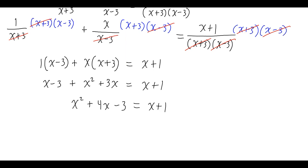This is a quadratic equation, so let's get the quadratic equal to 0. I'll subtract x from both sides and I will subtract 1 from both sides. So I have x squared plus 3x minus 4 equals 0.